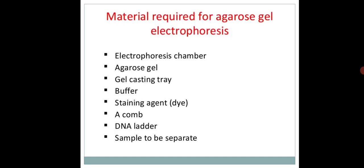Materials required for agarose gel electrophoresis: electrophoresis chamber, agarose gel, gel casting tray, buffer, staining agent, comb, DNA ladder, and the sample which we want to separate. These are the requirements for electrophoresis, and we will cover them in detail in the next lecture. Thank you.